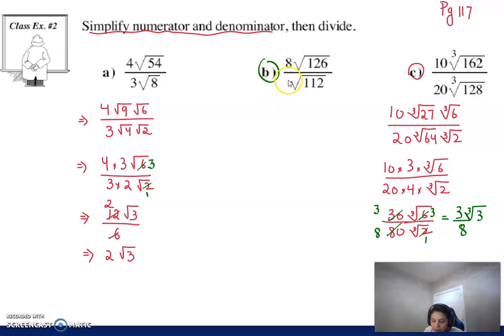So let's take a look how this one gets simplified. Again, I can't divide 126 with 112. So what we're going to do is simplify this. It ends up becoming square root of 9 and 14, and in the denominator, we have 16 and 7.